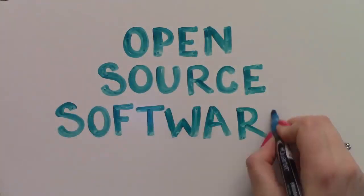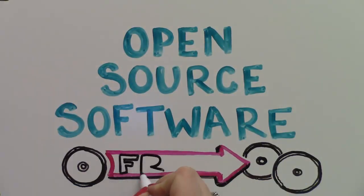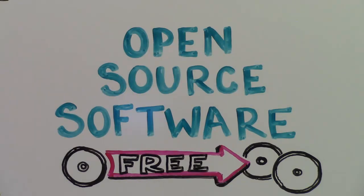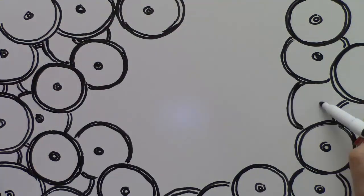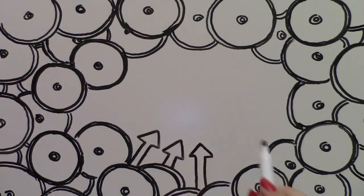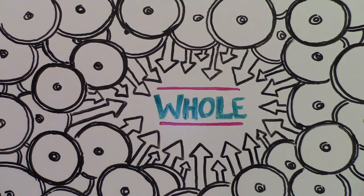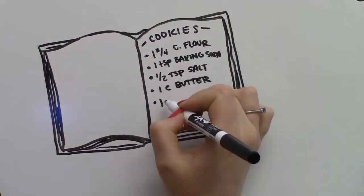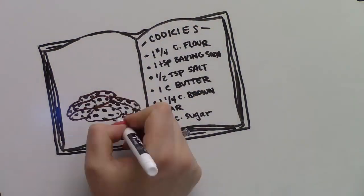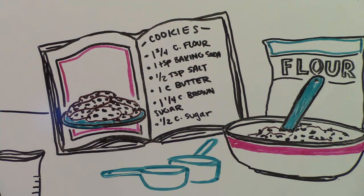Most people understand that open source software is software you can copy for free. What's less understood is how the potential chaos of all these copies can be transformed into a collaborative whole. Let's break down how open source works using a family cookie recipe as a metaphor we can all relate to.